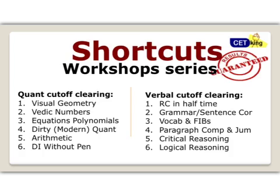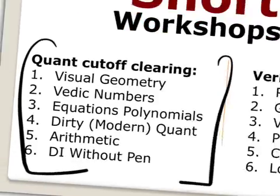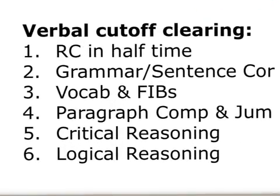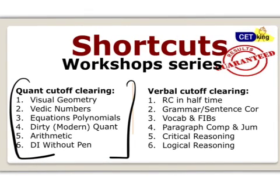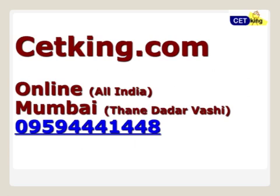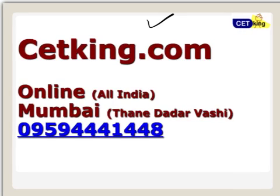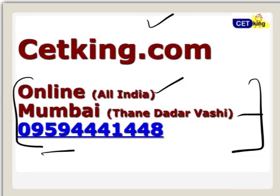What we do we have a shortcut workshop for all these things - combination, probability comes as part of quant cutoff clearing workshops. Six topics within quant and six topics within verbal. If you want to join us you can join us for this program. More information about this is given on cetking.com. You can join us for the classroom program in Mumbai or online program all India, sitting anywhere. Please call us on this number 959 triple 4 1 double 0 4 8 for more details about joining us.